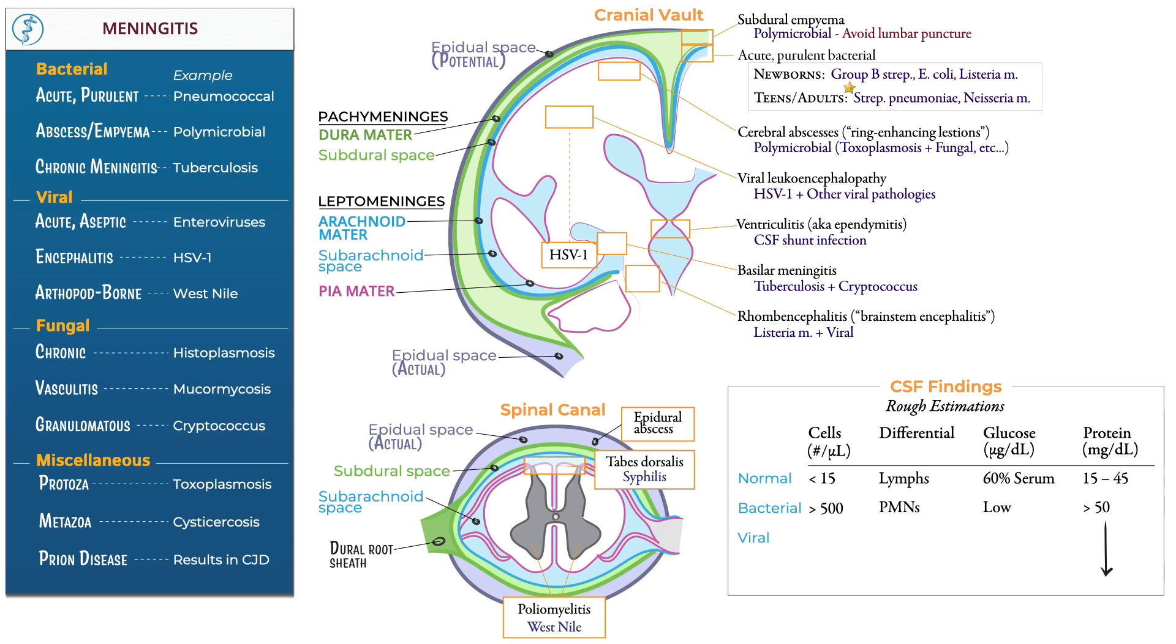In viral meningitis, cell counts are typically less than 500. The majority of cells are usually lymphocytes. The glucose is often normal. This is a key distinguisher from fungal and TB in bacteria. In these, the glucose is mentioned as low. Note that although eventually viral meningitis should have a predominance of lymphocytes, very early on, there may be a neutrophilic predominance.